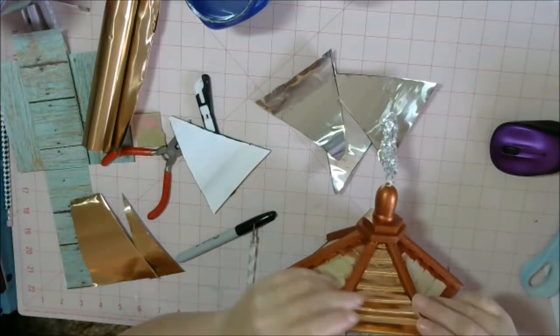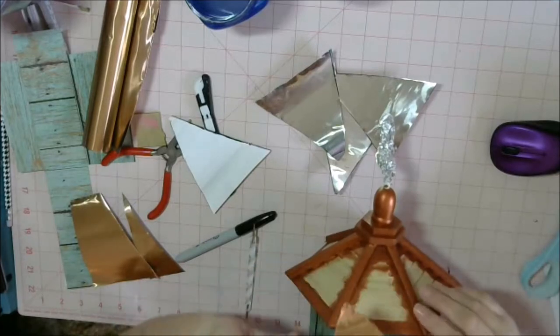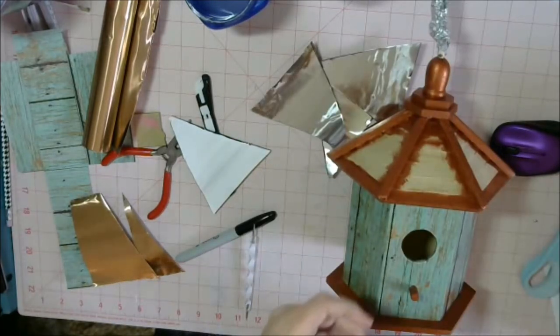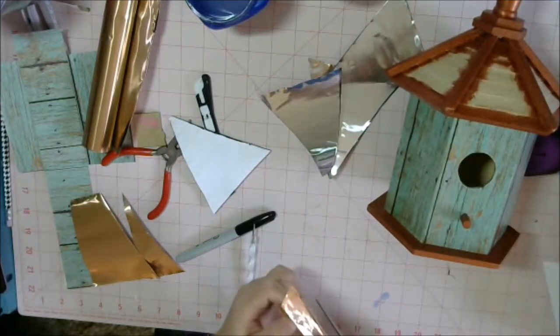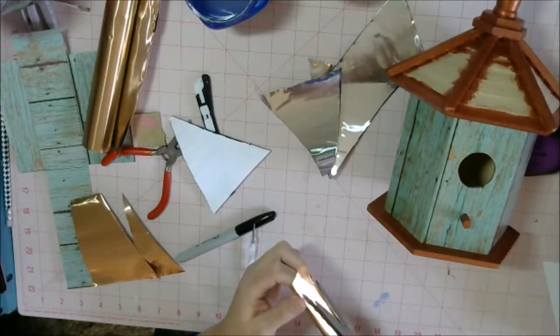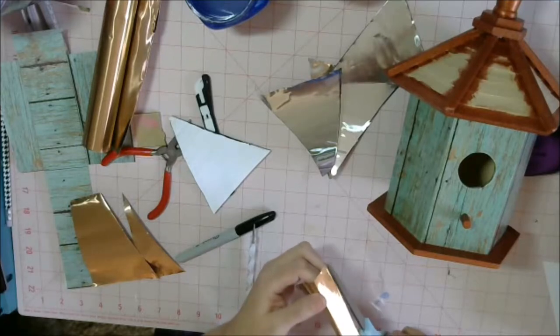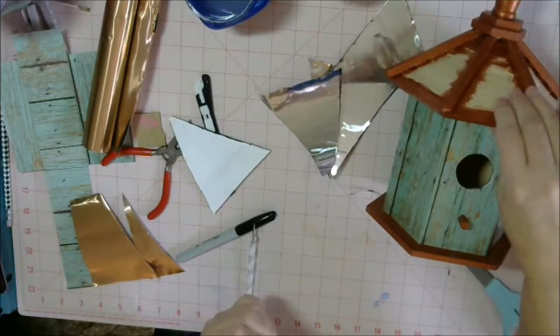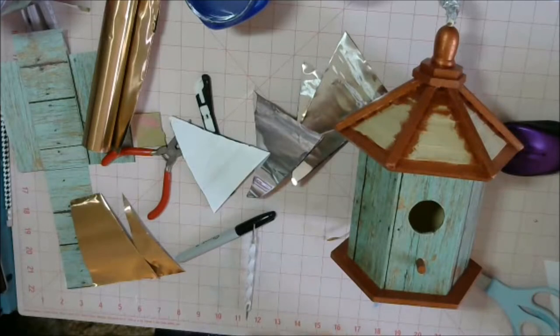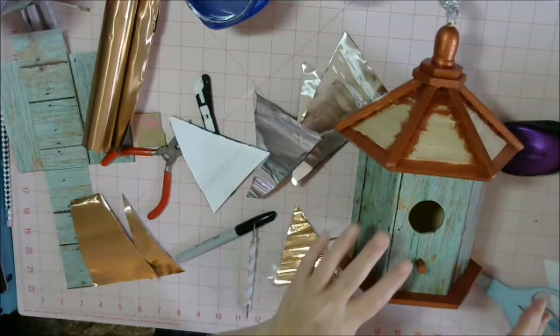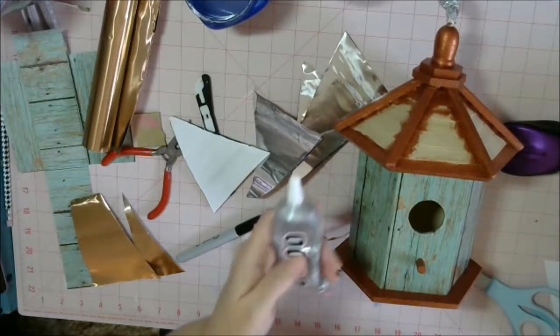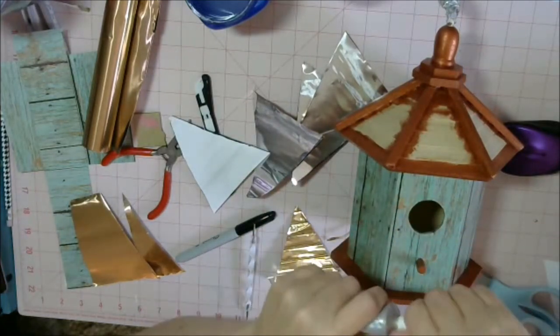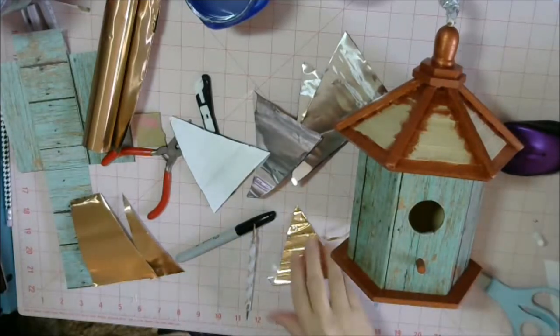All right, and once we get that shaped, I'm going to pull that gently out of there. All right, and down here I'm just going to cut right along here - it was just a little bit longer than the underside of the birdhouse. So now that we have that shape, you're going to want to do this for all six sides. And what we're going to use is E6000 to hold our copper roof into place.